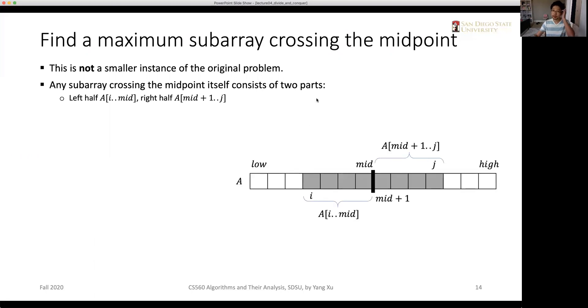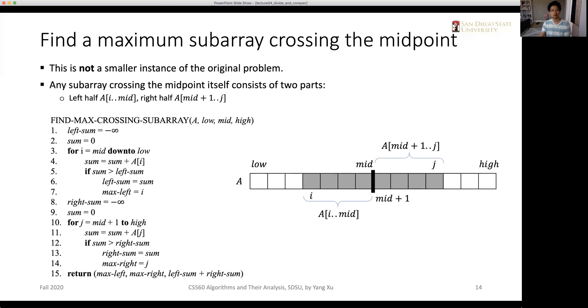So if you look at the shadow part in the dark gray color, these are the two parts of the maximum sub-array here. So we use a procedure defined in this way. Let's call this procedure find max crossing sub-array.